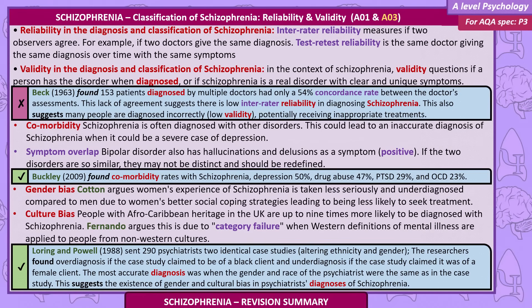Buckley, 2009, found comorbidity rates for schizophrenia: depression 50%, drug abuse 47%, PTSD 29%, and OCD 23%. Gender bias: Cotton argues women's experience of schizophrenia is taken less seriously and underdiagnosed compared to men, due to women's better social coping strategies leading to being less likely to seek treatment.